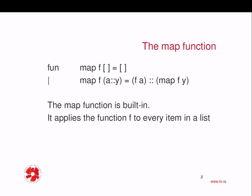Recall from our discussion on Scheme that we have already discussed this important function. Map takes two arguments, a function f and a list, and applies the function to every item in the list. The implementation of map shown here uses cases and patterns, one of the possible programming techniques discussed in a previous lecture. One possible case is that the list that comes in is empty — the empty list is a pattern.